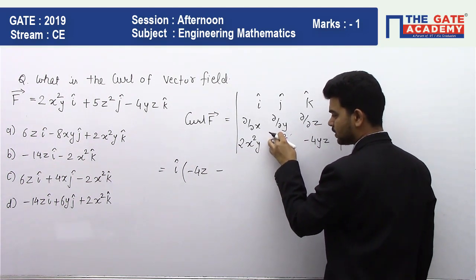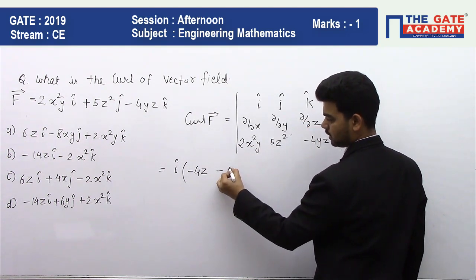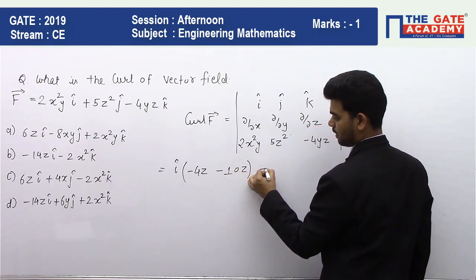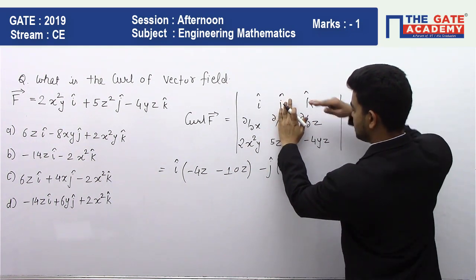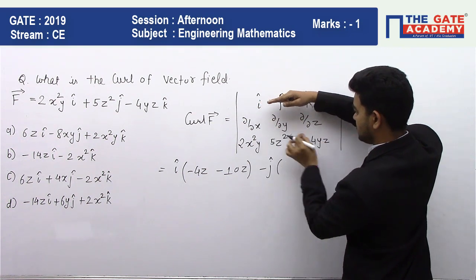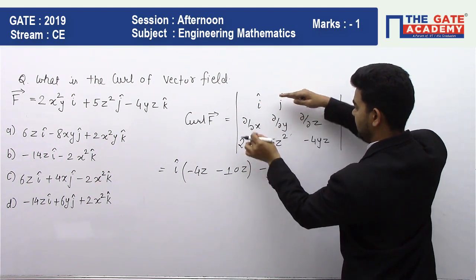And here let's see, now this and this, we will only see these elements, these four elements. This into this means we will differentiate this function with respect to x, so it will be zero.